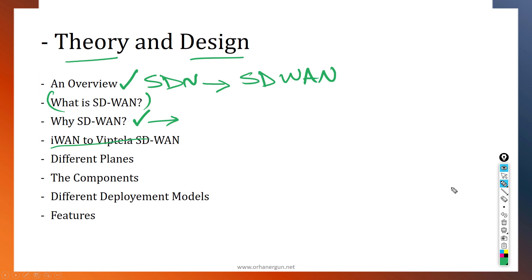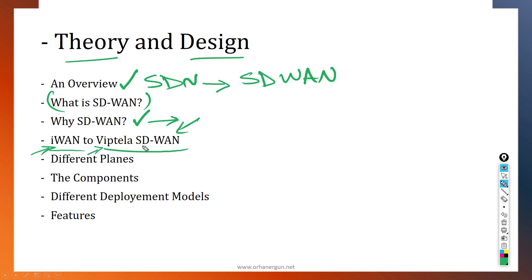Then I will do a comparison between iWAN versus the Viptela SD-WAN. iWAN is the old, initial version of Cisco's implementation for software-defined wide area networking. I will cover the benefits of the Viptela SD-WAN — Viptela being a company that Cisco acquired — and the resulting product is called Cisco SD-WAN.